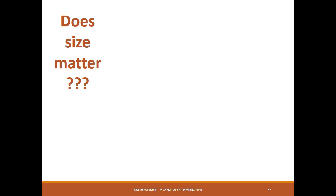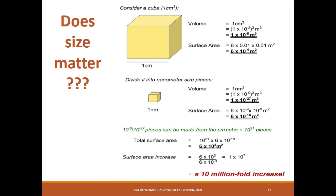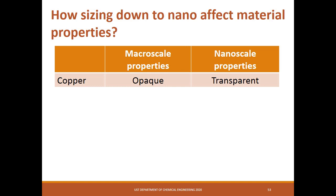Does the size of the material really matter? If we consider a cube with 1 cm × 1 cm × 1 cm, the total surface area is 6 × 10⁻⁴ meters squared. However, if we divide this cube into smaller cubes of 1 nm × 1 nm × 1 nm, the surface area will increase by 10 million fold. Copper, commonly used in wires, is known to be conductive and opaque. However, at nanoscale, it becomes transparent but still retains good conductivity. Several studies have been done to produce an electrically conductive transparent ink using copper nanoparticles to replace expensive electroconductive silver nano inks.